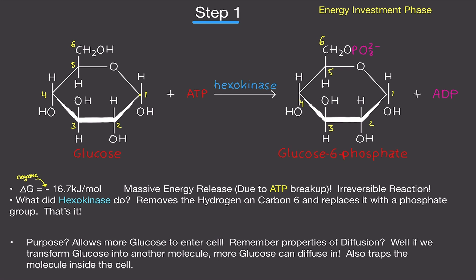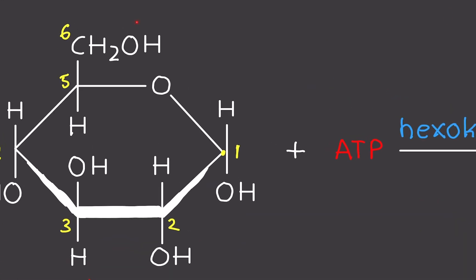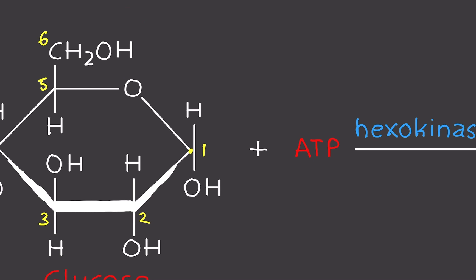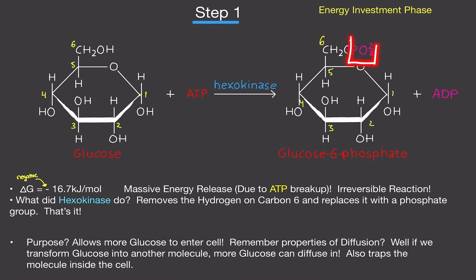So what did hexokinase do? What we did is we removed one of the hydrogens — we took this hydrogen out here and replaced it with a phosphate group, PO3. The 2-minus is just the charge, don't worry about that. Just PO3. That's all we did: take out the hydrogen, replace it with a phosphate group.